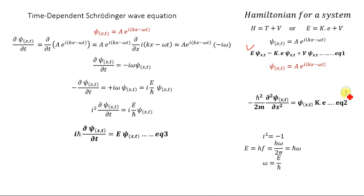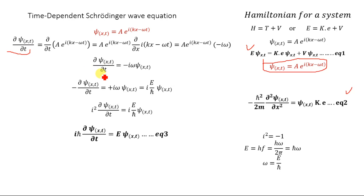Returning to the wave function ψ = Ae^(i(kx − ωt)), we now take the partial derivative with respect to time. This gives ∂ψ(x,t)/∂t = −iω · Ae^(i(kx − ωt)) = −iω · ψ(x,t). Note that Ae^(i(kx − ωt)) = ψ(x,t), so the result is −iω·ψ(x,t). This time we only need the first partial derivative with respect to time, not the second.